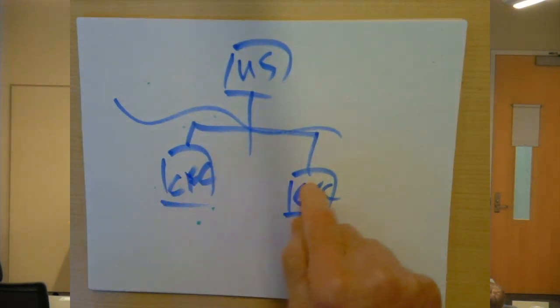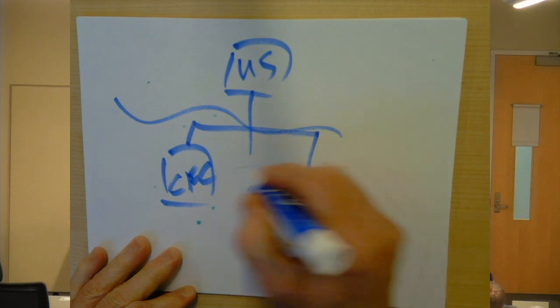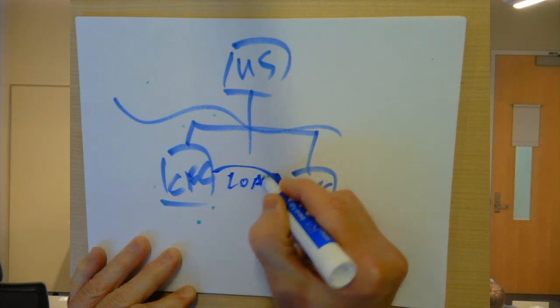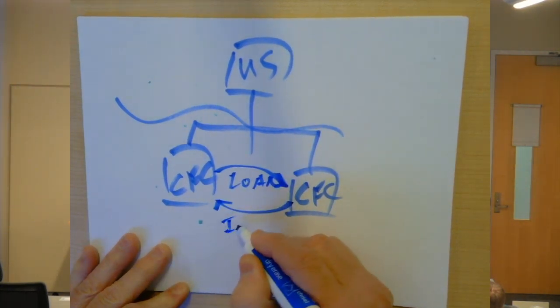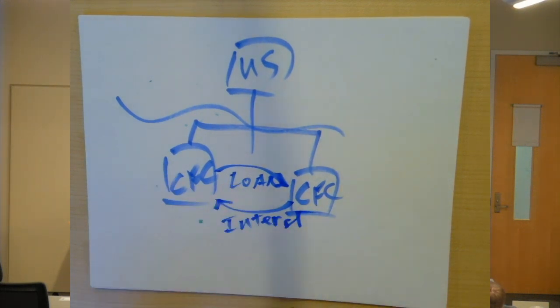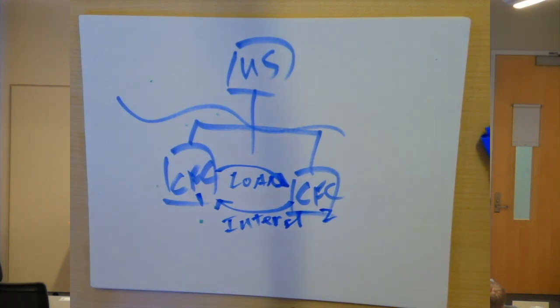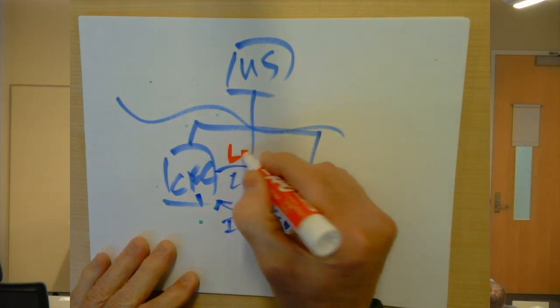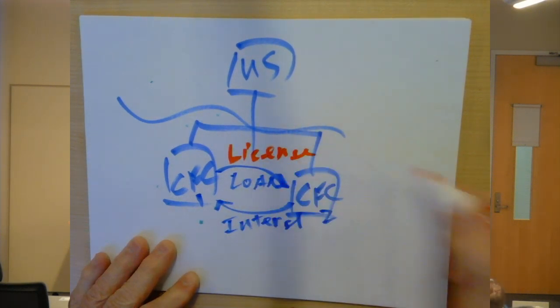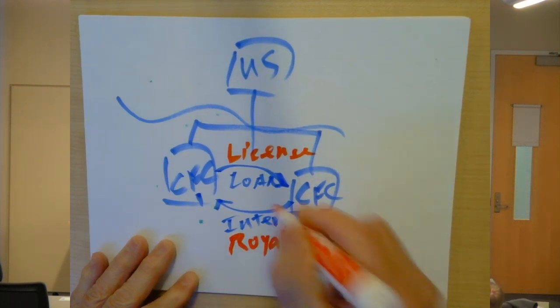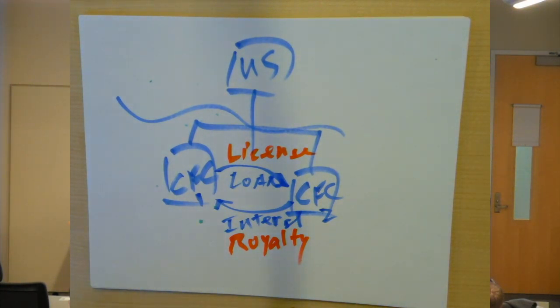So for example, between two CFCs, you might see a loan which causes interest to go back to the other CFC, CFC 1, CFC 2. You might also see a license of property, intellectual property, and as a result royalty going back the other way. You might also see the rental of physical property. Could be plant, equipment, anything like that.